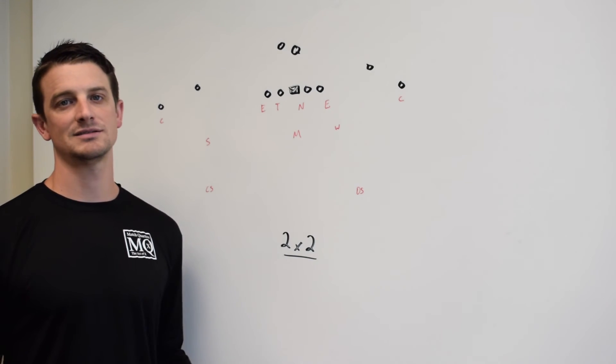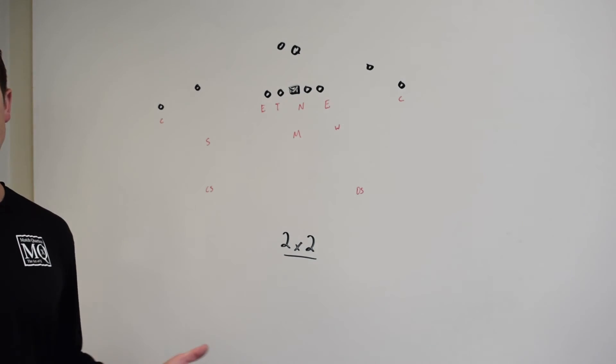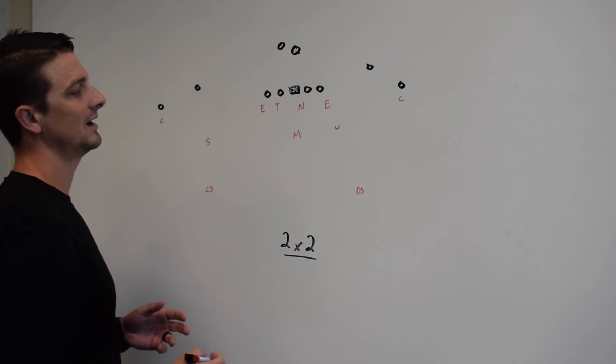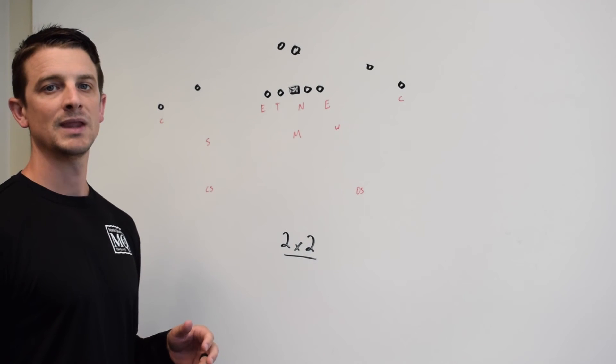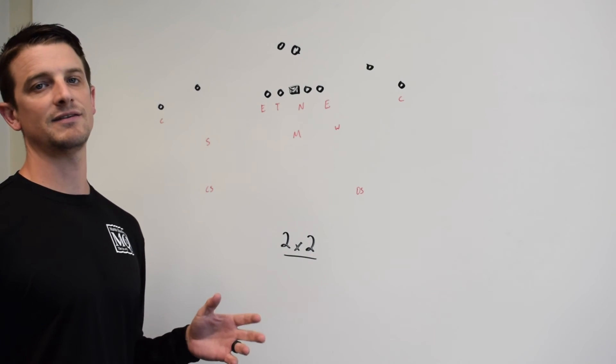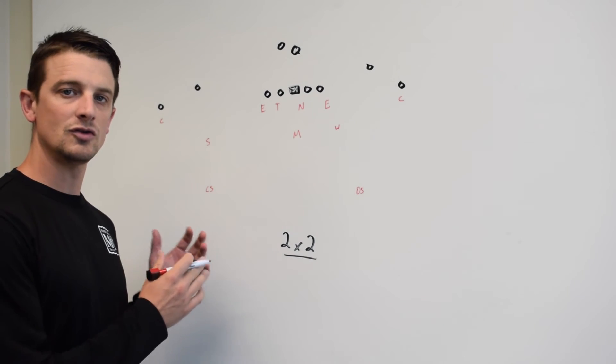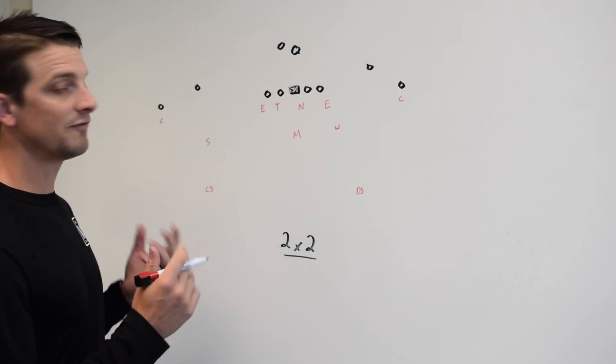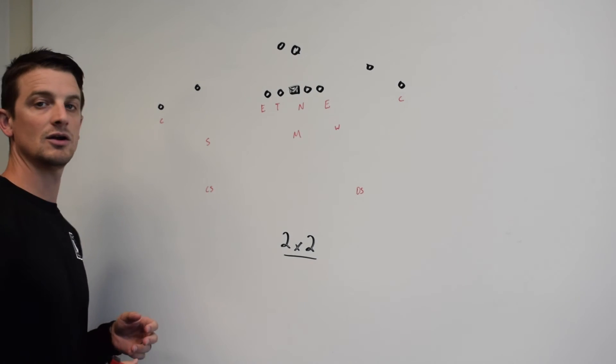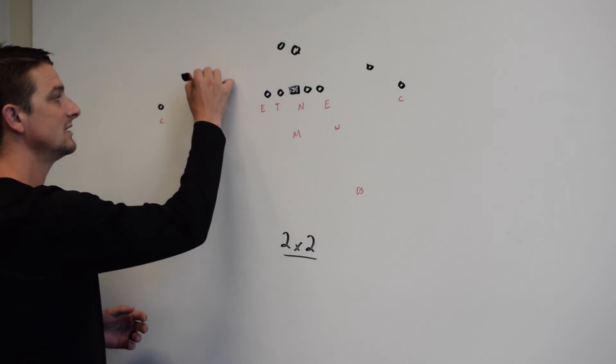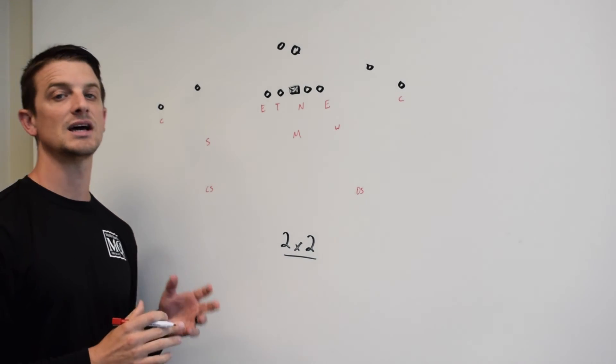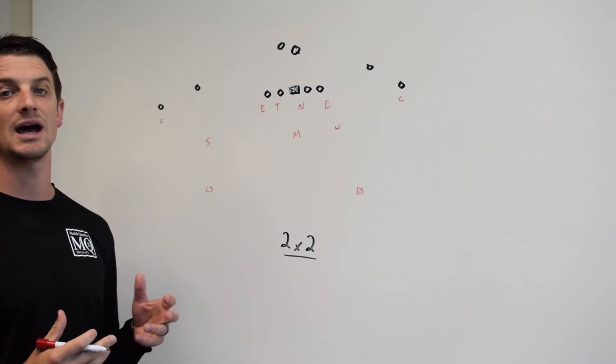So the first thing we're going to talk about is cover downs. We're going over 2x2 standard spread set. Your cover downs are going to be the closest person to the slot player. The cover down is defined as the distance they are to the slot player. So a full cover down, like I've illustrated in here, which you see in a lot of 4-2-5 defense, the Sam linebacker is going to be on the inside shade, or what I like to call the inside eye of the slot receiver.